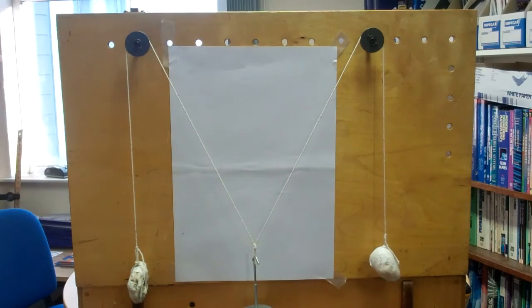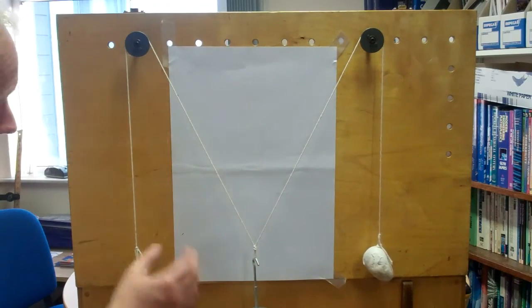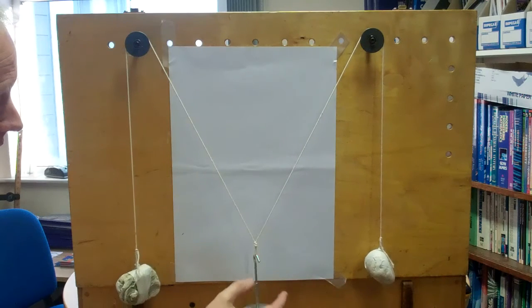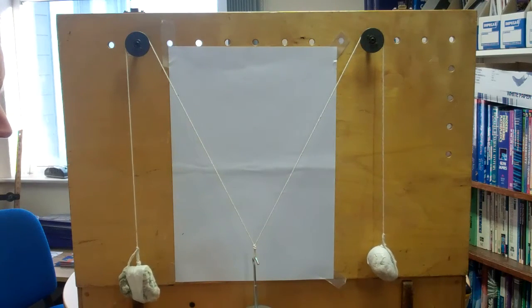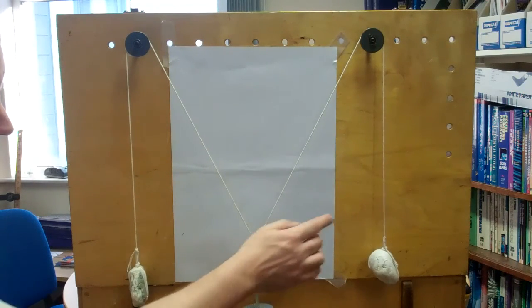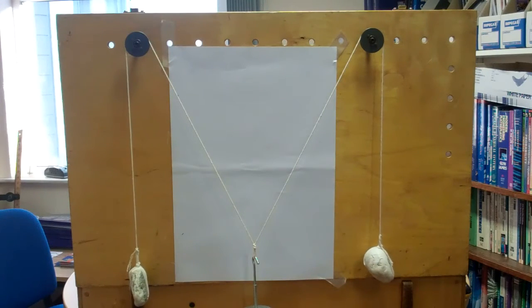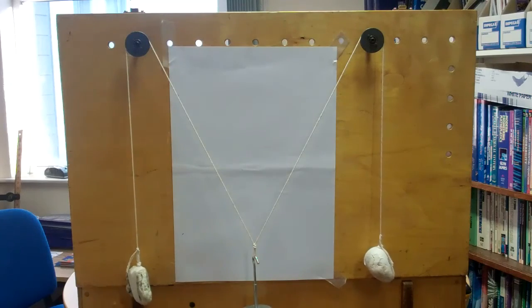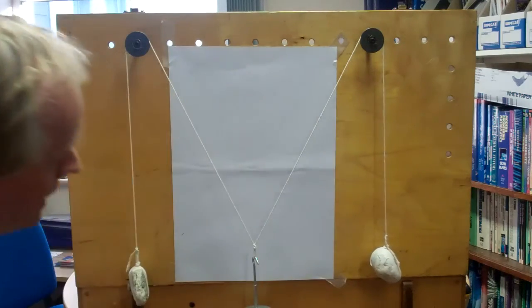We've set up a situation here with a length of string passing over two pulleys. In the middle is this object which we know has a mass of 400 grams, and at either end are two rocks. The aim of the exercise is to find the mass of the two rocks and what we're going to do is to